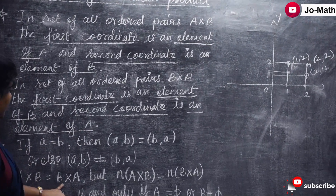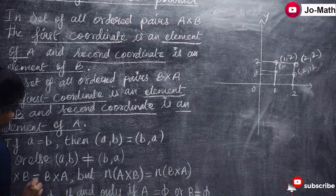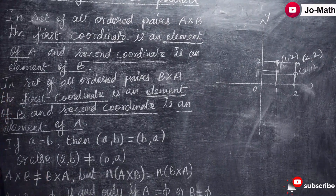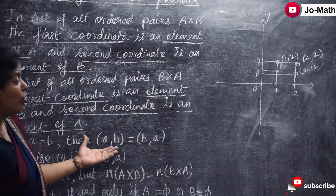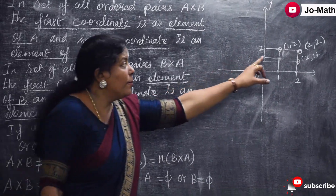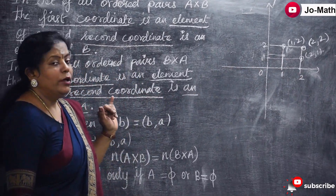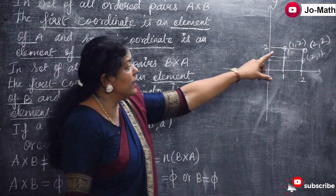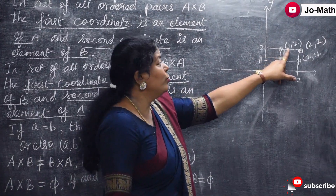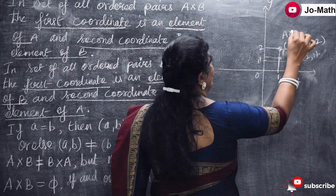A cross B is not equal to B cross A. If you look at the ordered pairs, (1,2) and (2,1) are not equal — they represent two different points. Suppose this is A cross B: the first element is a and the second element is b. In B cross A, b comes first and a comes second, so the ordered pairs differ.